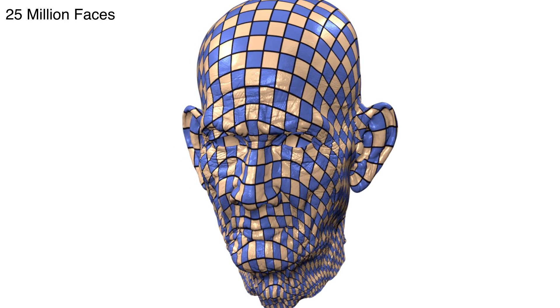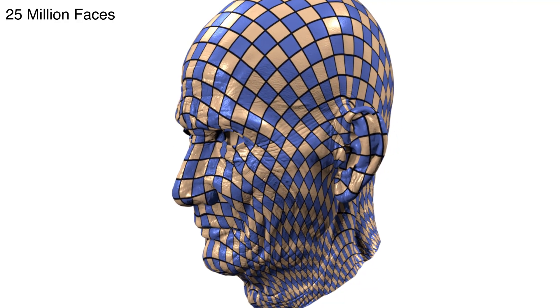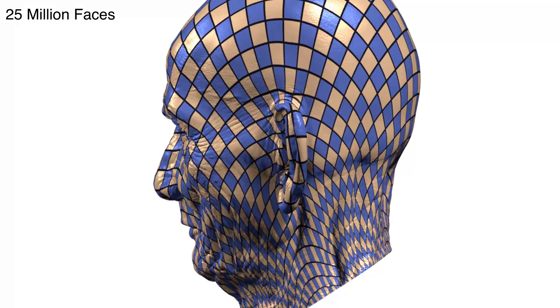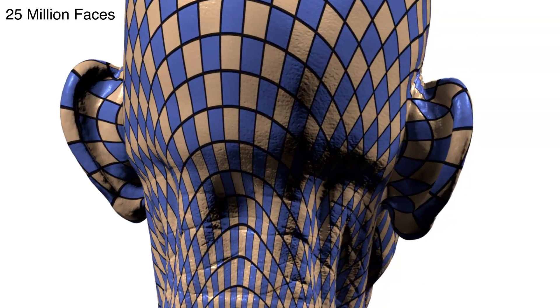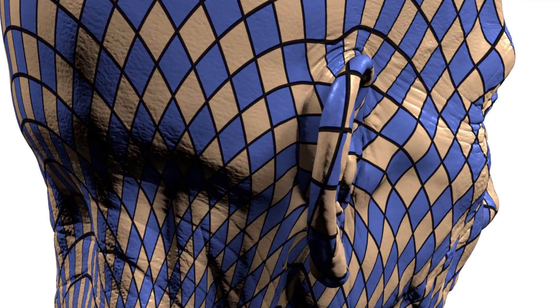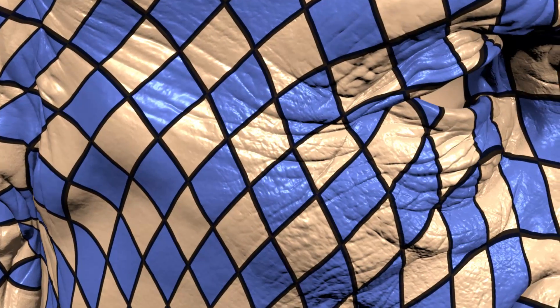We propose a novel method to compute locally injective maps that is guaranteed to minimize an isometric or conformal energy while scaling to datasets with tens of millions of faces. In this example, an inversion-free map with 25 million faces is computed in 1 hour and 20 minutes.